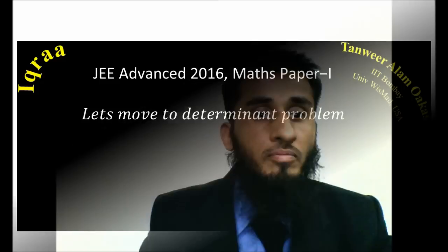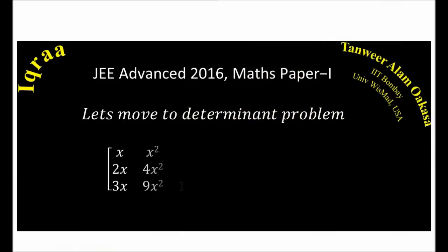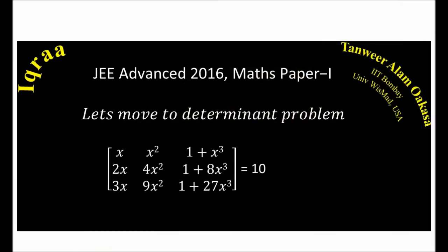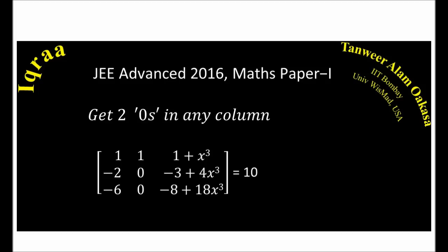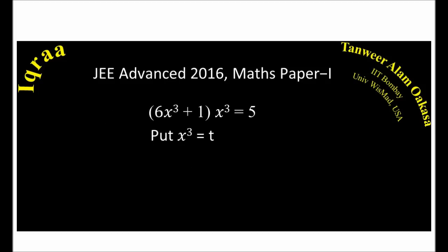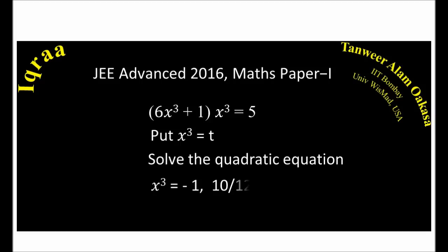So we are halfway and we have got 9 marks. Now let's move to the determinant problem. We need to find the distinct values of x so that the determinant equals 10. The easy way to solve is to get two zeros in any column — here we get zeros in the second column. When we evaluate, we simplify by putting x³ = T and get a quadratic equation. Solving gives x³ = −1 and 10/12, so we get two distinct values of x.